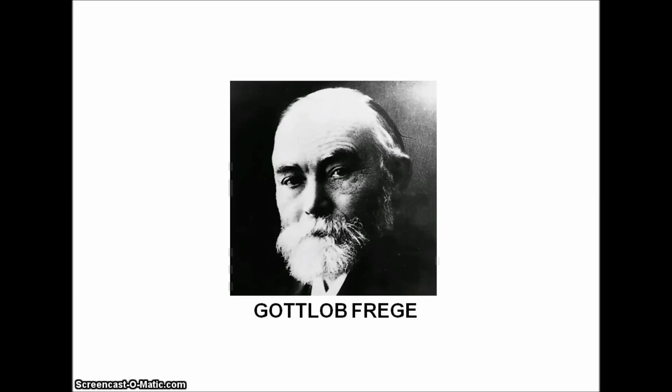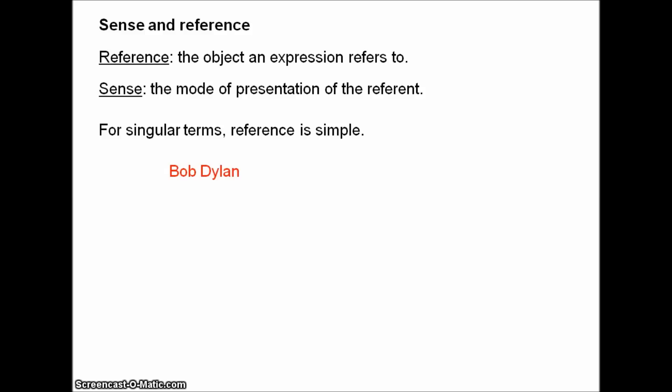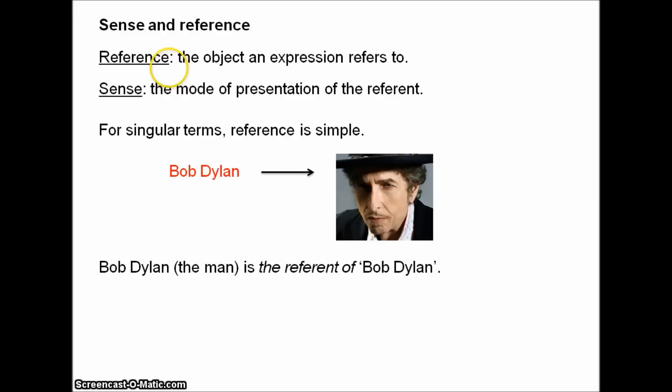I'm going to be quite brief here. Frege had a general philosophy of language, but the important part for us is his distinction between sense and reference. The basic idea is that every expression has a reference and every expression has a sense. The reference is the object that an expression refers to, and the sense is the mode of presentation of the referent. Reference is quite simple for singular terms. Consider a person's name — Bob Dylan. The referent of this name is the man, Bob Dylan.